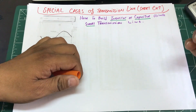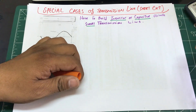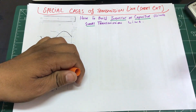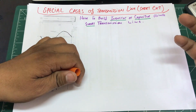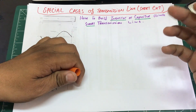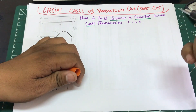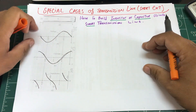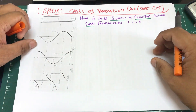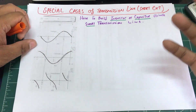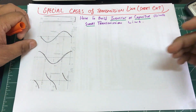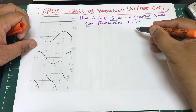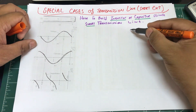Welcome back. In this video we're going to look at special cases of transmission lines. We're going to start with short circuit, then move on to open circuit, and learn how I can make devices out of short circuit and open circuit — how I can make a piece of wire acting as a transmission line act as an inductor or capacitor.